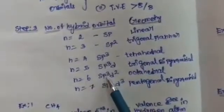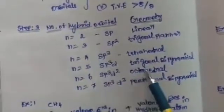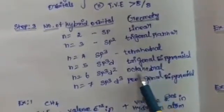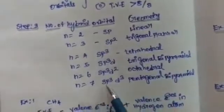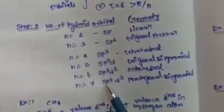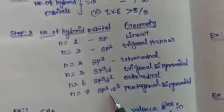When n equals 6, hybridization is sp3d2 and geometry is octahedral. When n equals 7, hybridization is sp3d3 and geometry is pentagonal bipyramidal.